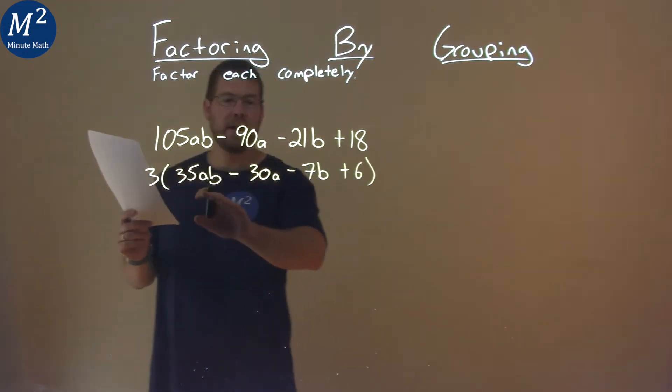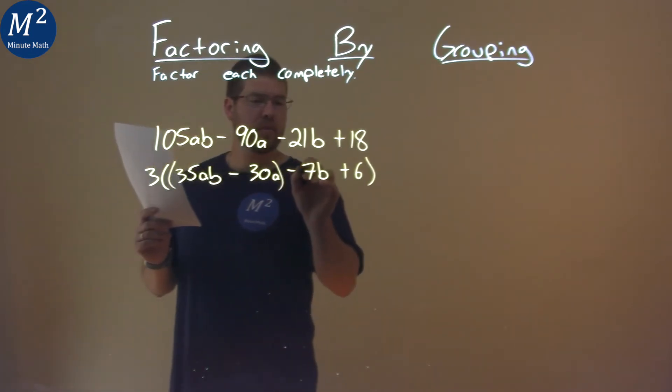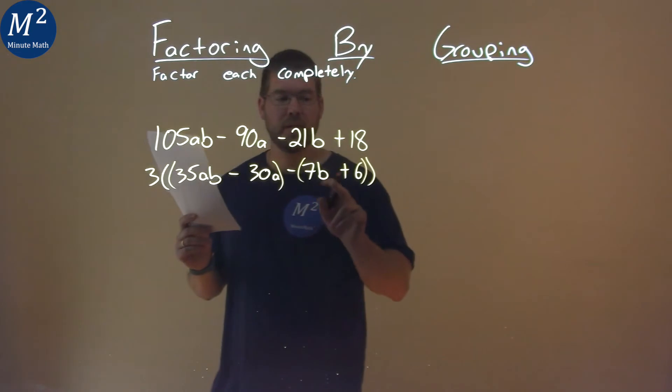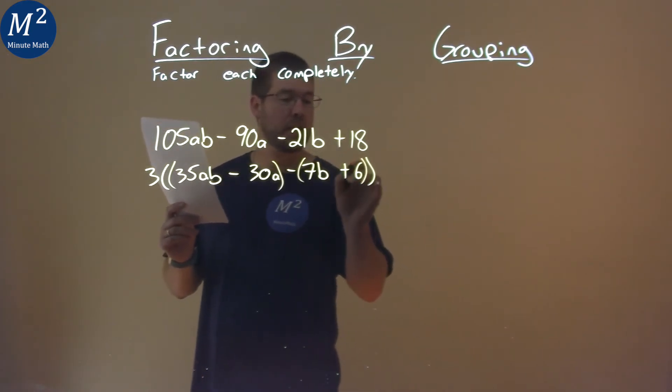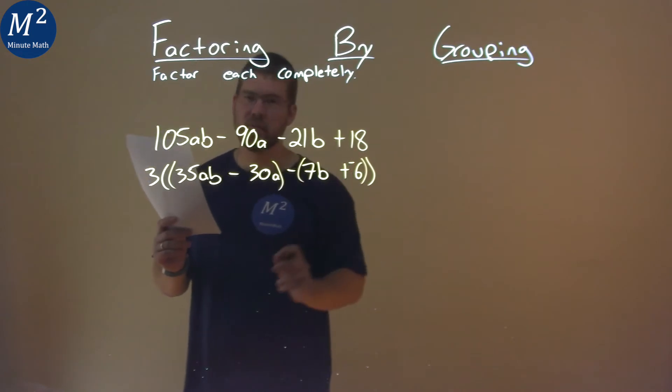So now I'm going to group the first two terms and the second two terms together. First two terms like this. The second two terms is a little tricky though. The minus sign only went to the 7b, not the 6. So to counteract that, put a minus on the 6 now. So when the minus sign gets distributed, it's a positive 6 still.